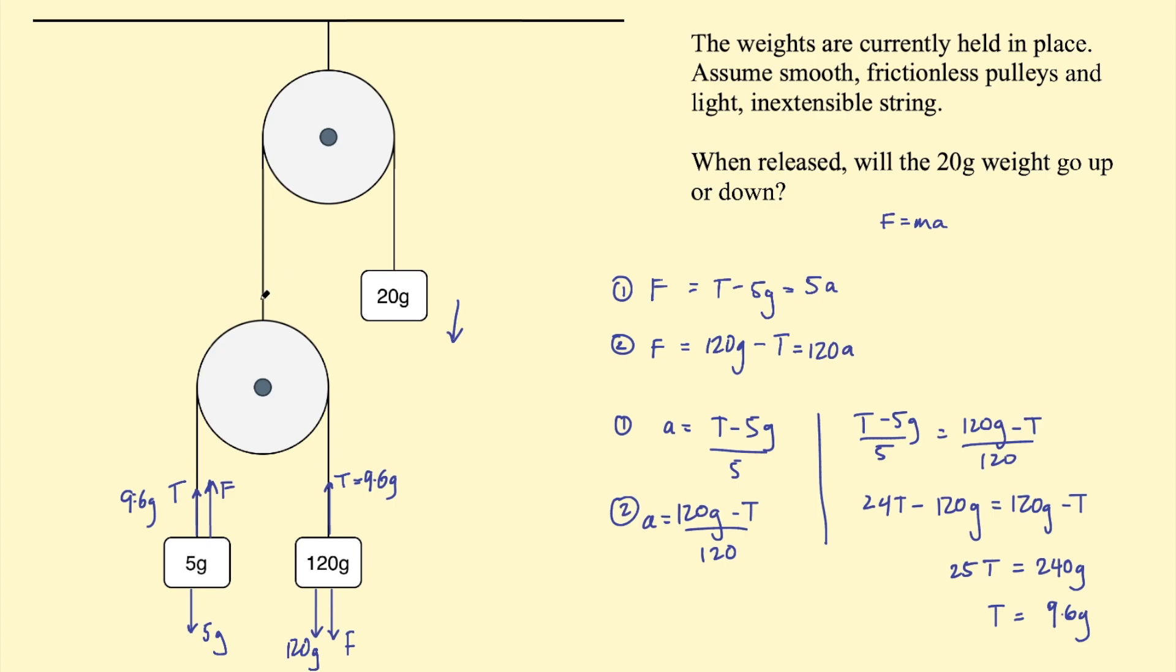And that means that the tension force from this pulley is twice that, so 9.6 times 2, which is 19.2 G. Then looking at this mass, the tension force is going to be equal to its weight. So its weight is 20 G. So its tension force is 20 G.